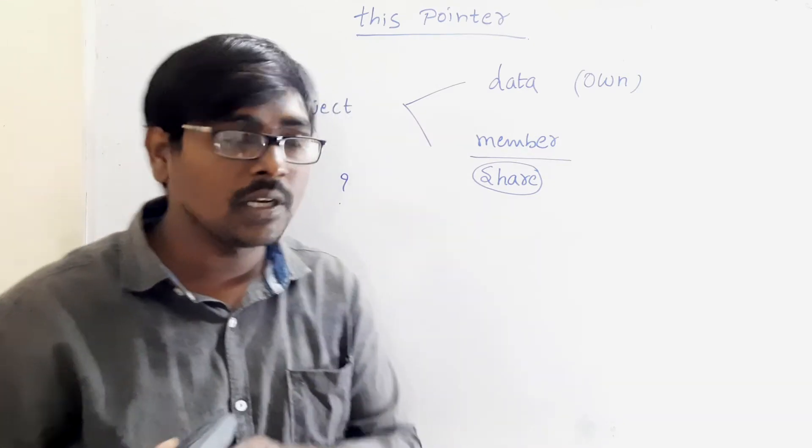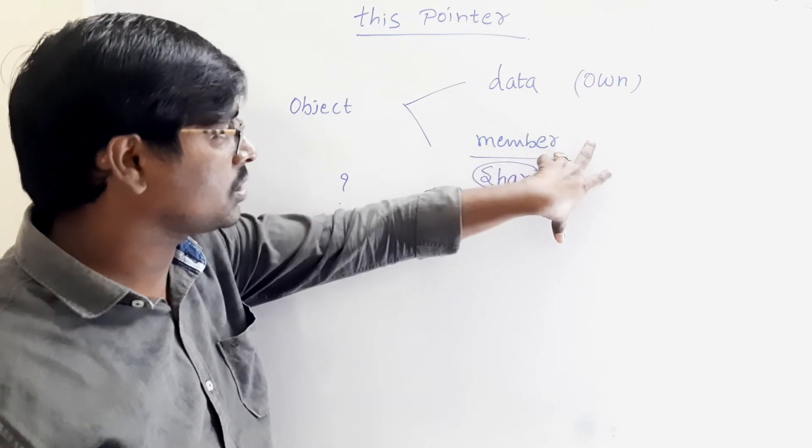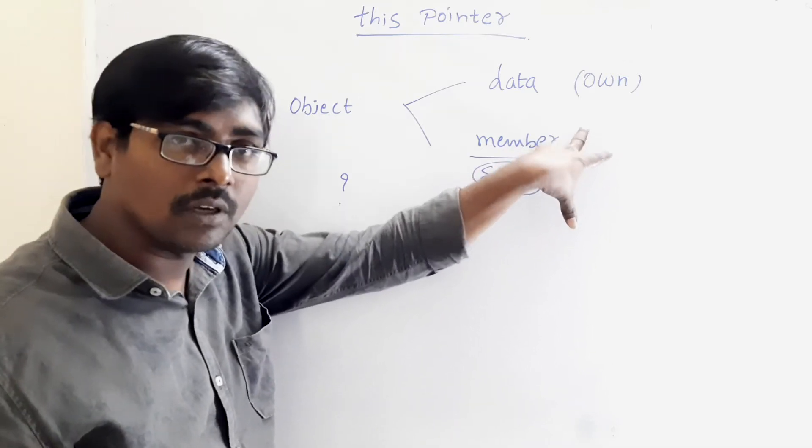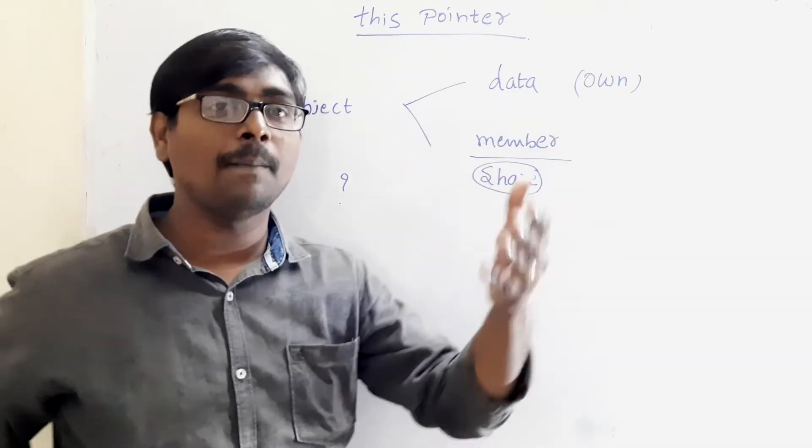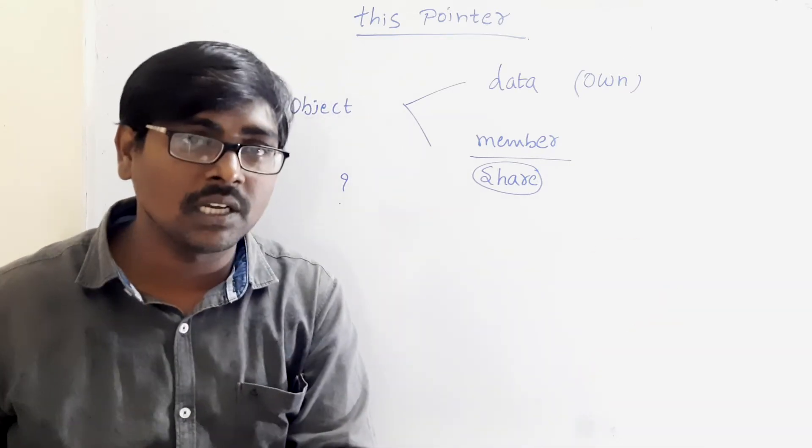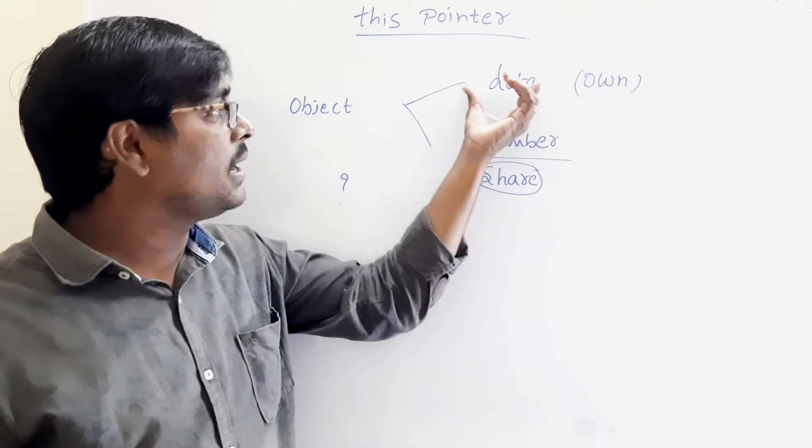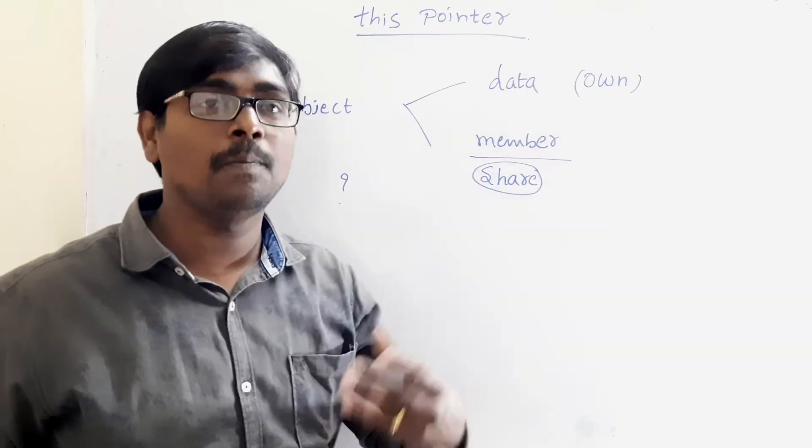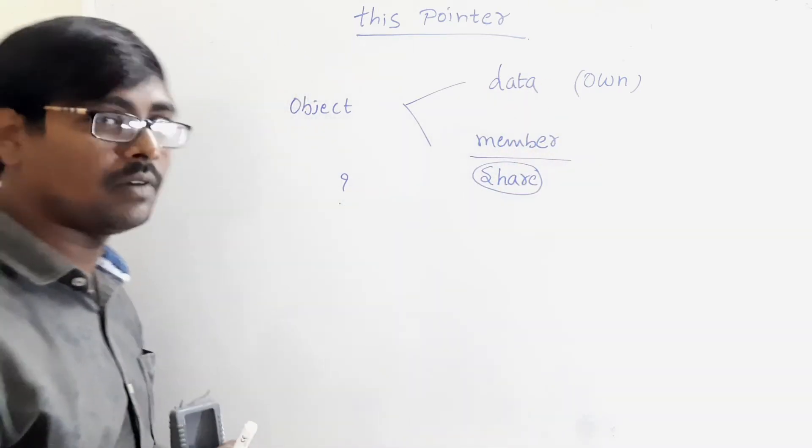That is, if at a time more than one object wants to access the member function. If one object updates the value as increment and another object updates the value as decrement, how are the data members updated properly? This is a very important thing.